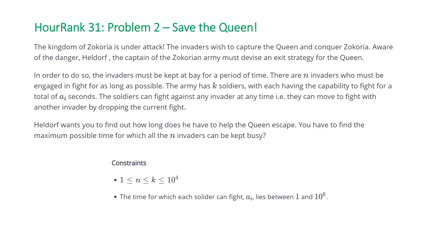The problem states the Kingdom of Zecoria is under attack. The invaders wish to capture the Queen and conquer Zecoria. Heldorf, the captain of the Zecorian army, must devise an exit strategy for the Queen. In order to do so, the invaders must be kept at bay for a period of time. There are N invaders who must be engaged in fight for as long as possible. The army has K soldiers, with each having the capability to fight for a total of A_i seconds. The soldiers can fight against any invader at any time; they can move to fight with another invader by dropping the current fight. Heldorf wants you to find out how long he has to help the Queen escape.